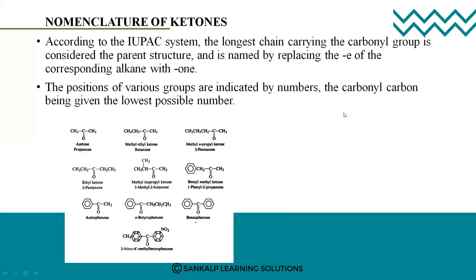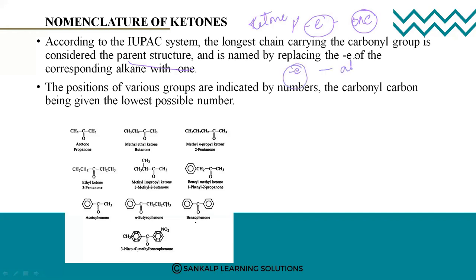Next is nomenclature of ketones. According to the IUPAC system, the longest chain carrying the carbonyl group is considered as the parent chain. The terminal 'E' is replaced by 'ONE' in the case of ketones, and the carbonyl carbon is given the lowest possible number.